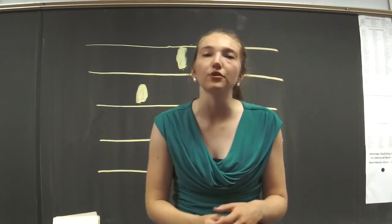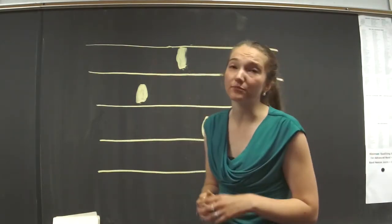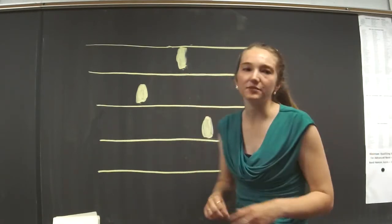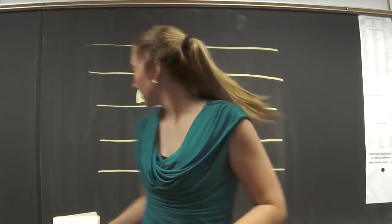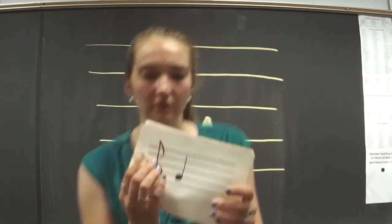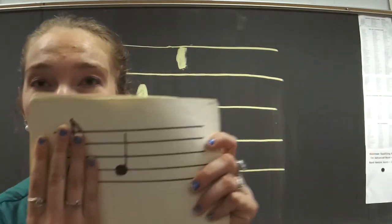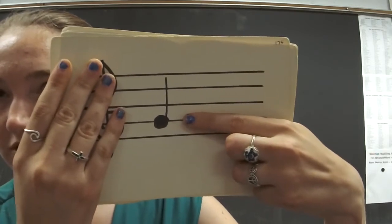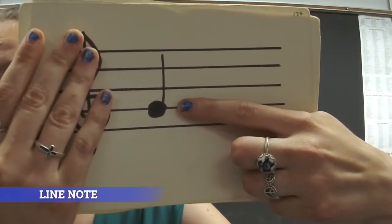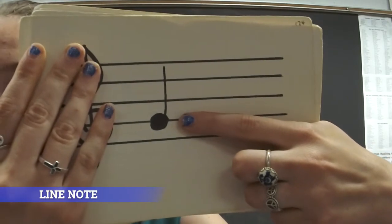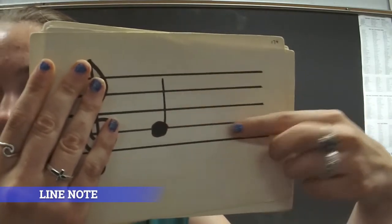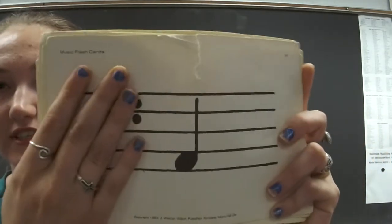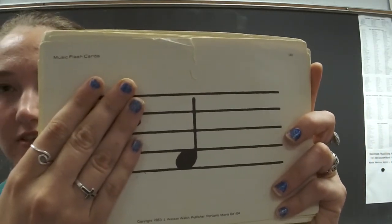No matter what instrument you play, you are going to be reading notes on these lines and spaces. So it's important for you to be able to decide whether a note is on a line or a space. Is this note on a line or a space? You can see how it's on a line because the line goes right through the note — that's a quarter note, by the way. What about this one? It's on a space because it's between these two lines.